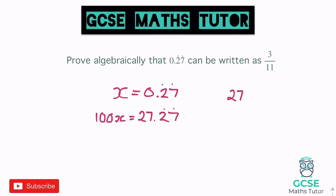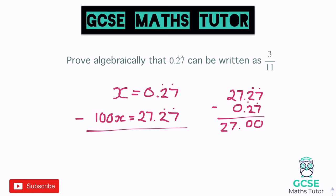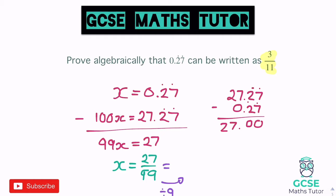So 27.27 take away 0.27 just leaves us with 27. So 100x take away 1x is 99x, and 27 on the right. No decimals have appeared in this one, so we can turn it straight into a fraction: x equals 27 over 99. To get from 99 down to 11 we divide by 9, and we do the same to the top: 27 divided by 9 is 3, and 99 divided by 9 is 11.